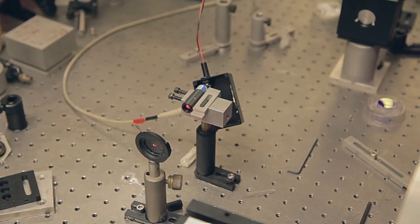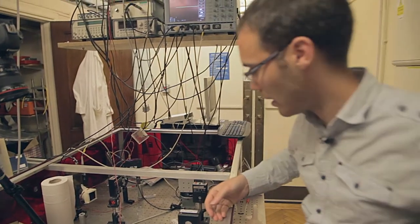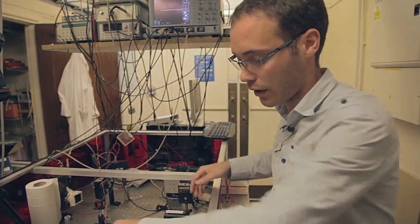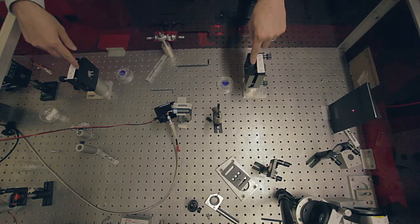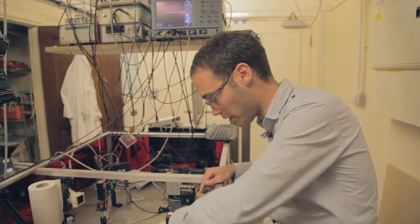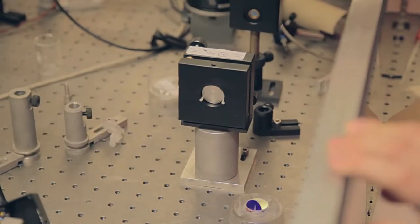OK, so I'm going to demonstrate how to align a basic laser system with a low-power diode laser. The objective here is to align the laser beam coming from this laser through the center of these two mirror mounts. In these two mirror mounts you can see we have a couple of metal discs with pinholes so that we'll be able to see when the laser beam is going through the center.